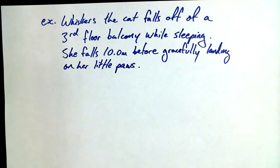So Whiskers the cat falls from the third floor balcony 10 meters downwards. She's woken from her nap during the fall, as you might expect, and then she lands gracefully on her little paws when she lands on the ground because as we all know cats land on their feet.